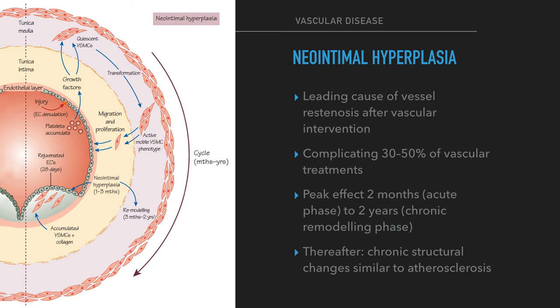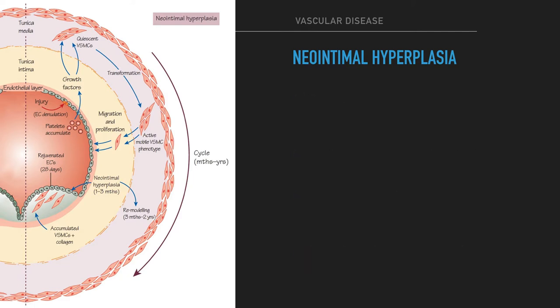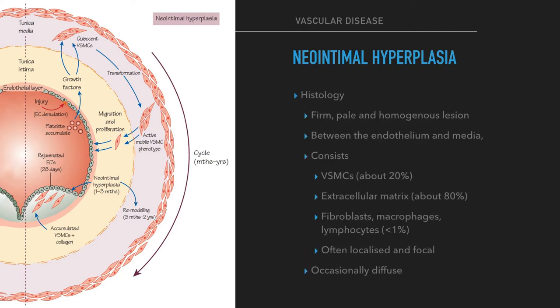After this time, there are chronic structural changes within the vessel, akin to atherosclerosis, with a similar risk of stenosis and plaque ulceration and rupture leading to thrombosis. Histologically, the lesion is firm, pale, and homogeneous, lying between the endothelium and media. It consists of vascular smooth muscle cells, about 20%, along with newly synthesized extracellular matrix, about 80%, with smaller amounts of fibroblasts, macrophages, and lymphocytes. The lesion may be localized and focal or occasionally diffused throughout the vessel or graft.